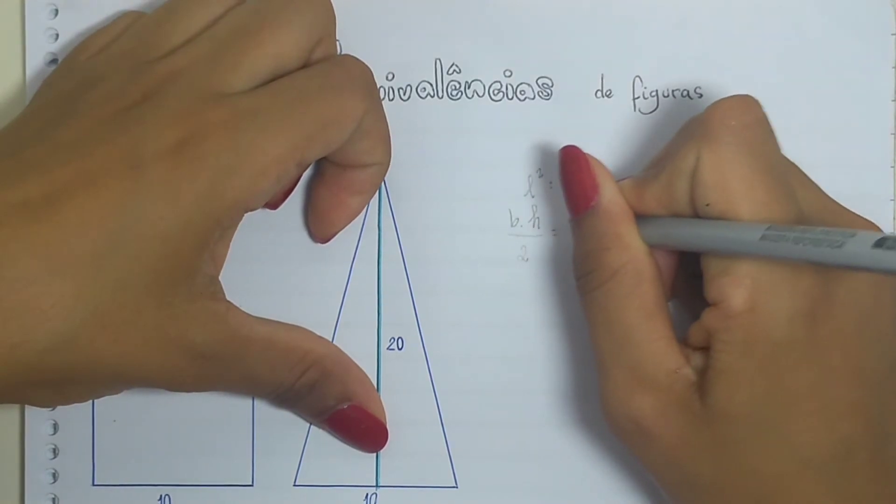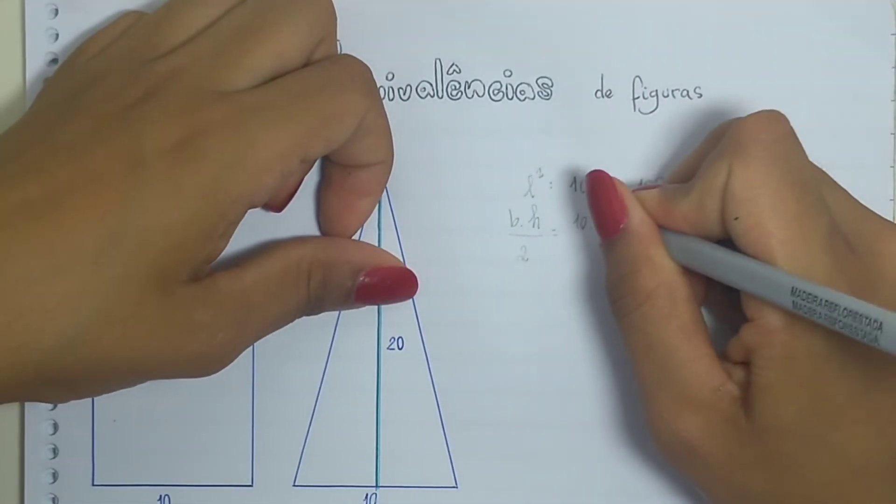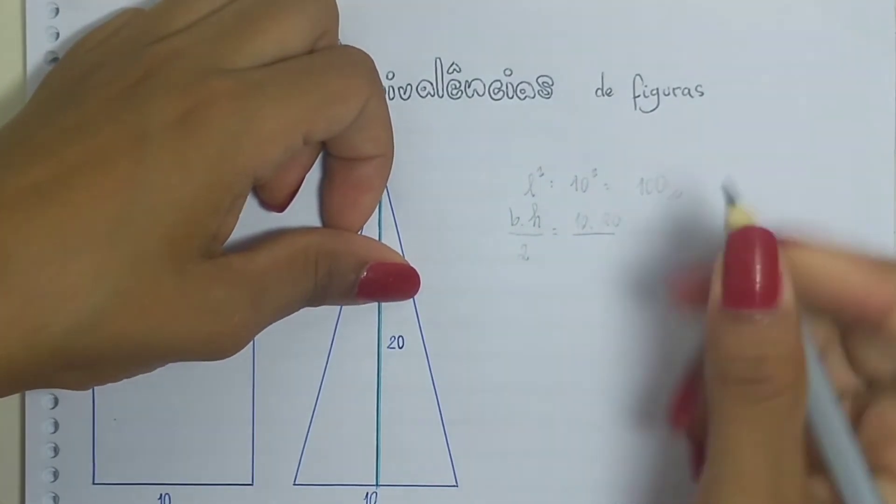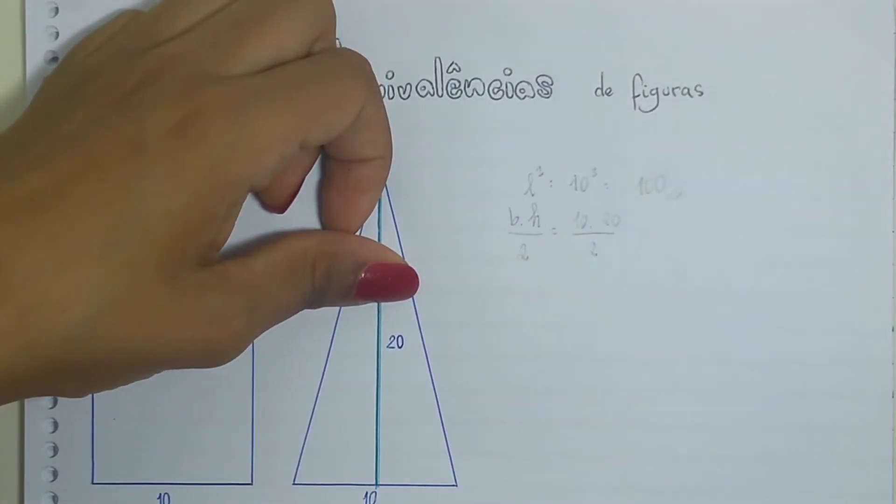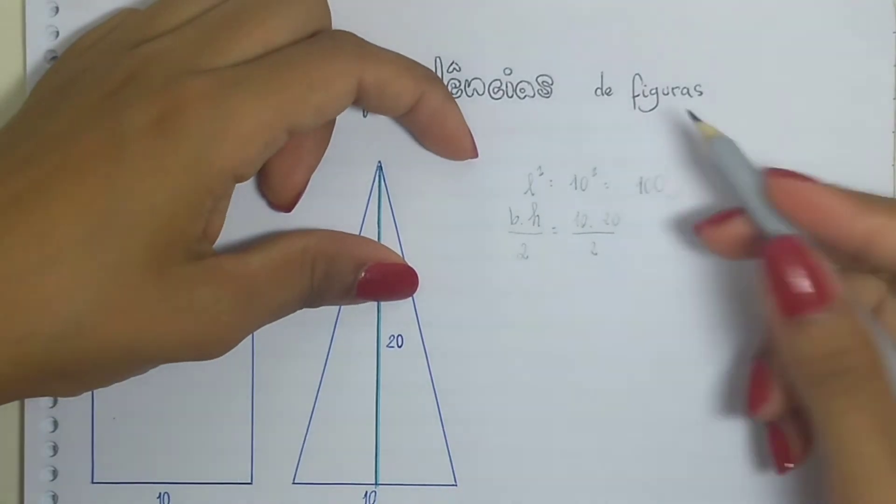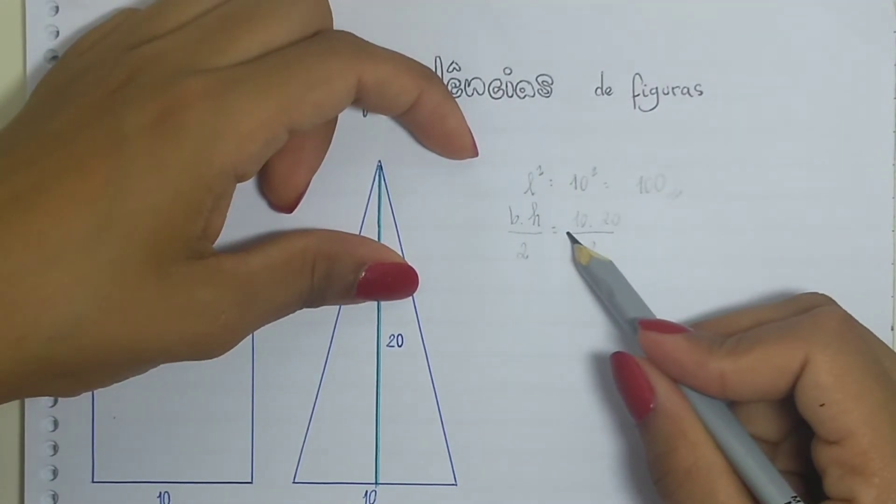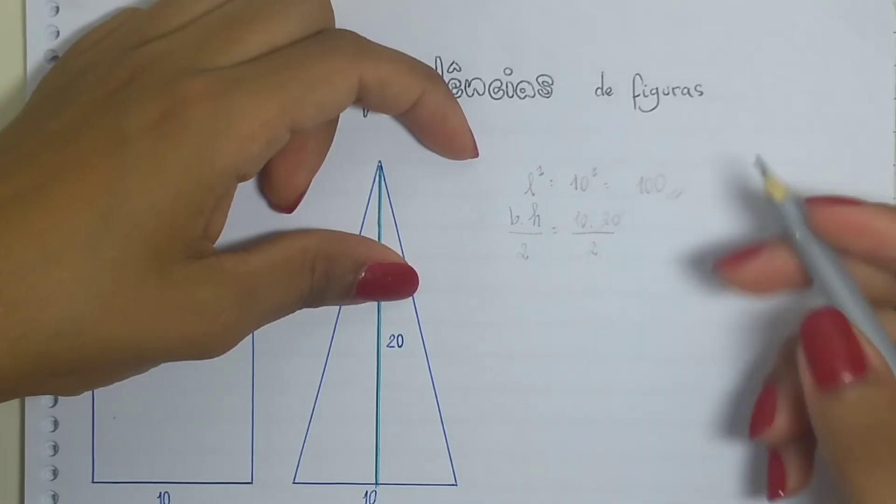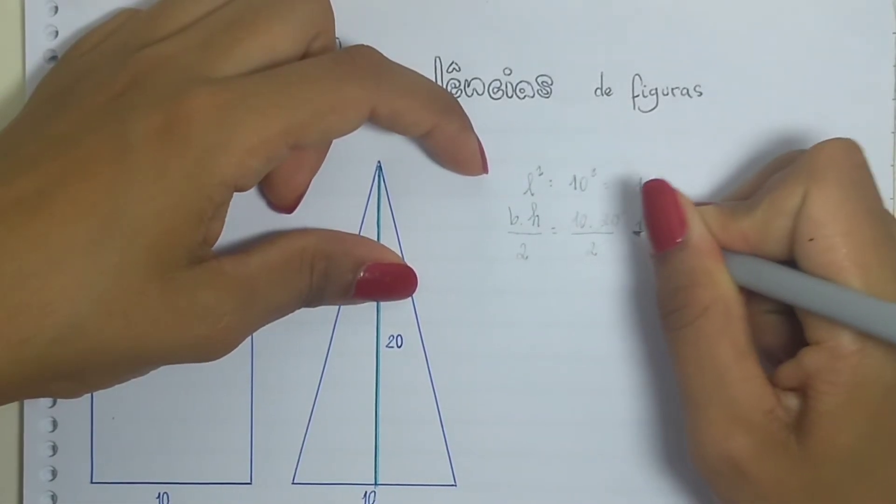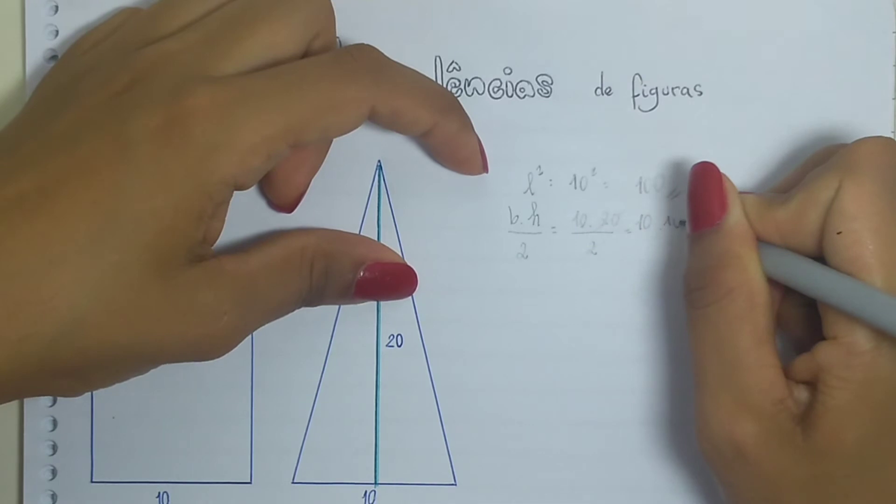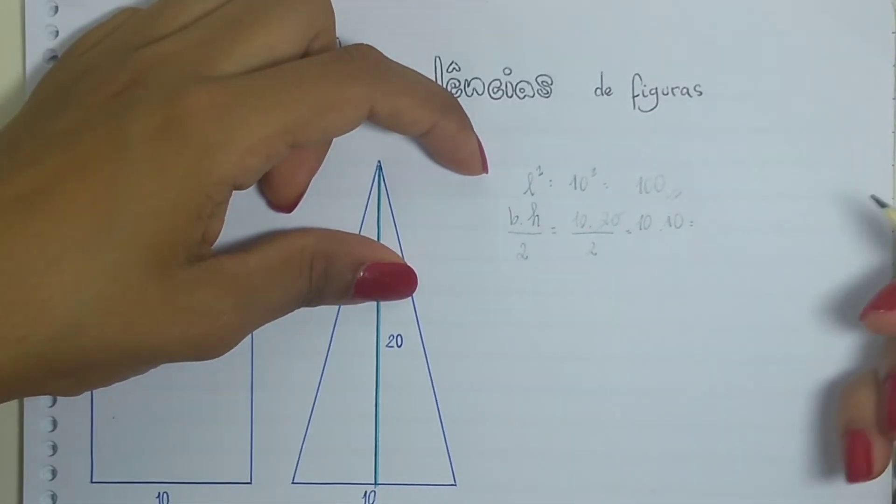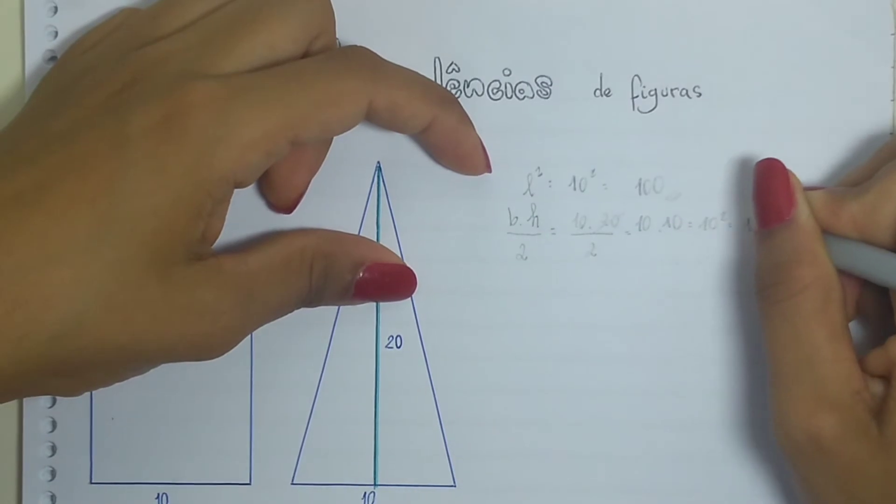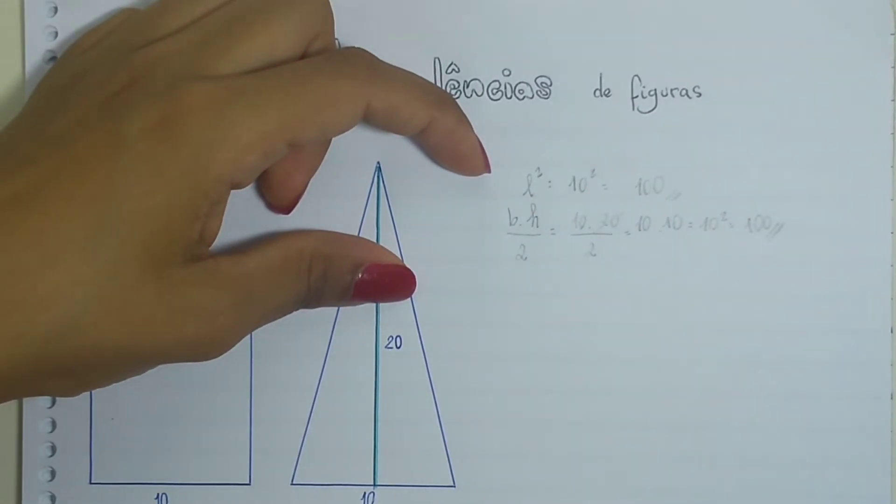The base, which is 10, times the height, which is 20, divided by 2. We can simplify here. The 20 with this 2, we will have 10 times 10, which is the same as 10², which will also be 100.